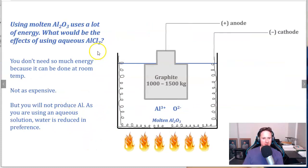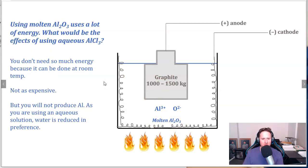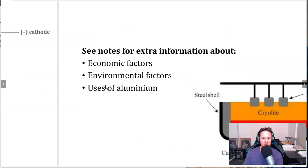Using molten Al2O3 uses a lot of energy. What would be the effect of using aqueous aluminium chloride? We wouldn't need as much energy since it could be done at room temperature — not as expensive — but you won't produce aluminium because the solution contains water, and water would be reduced in preference. The whole exercise would be a complete waste of time. This is why knowledge of chemistry is so important in industry in order to set this up correctly.